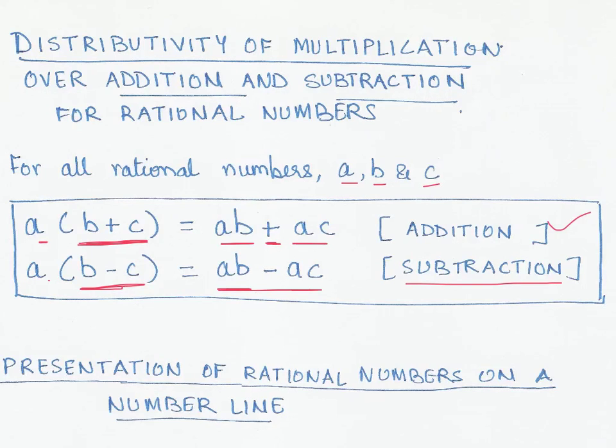Now a good exercise for you is to take any three rational numbers a, b, and c, and then you do the operation on the left hand side and see what is the result, and do the operation on the right hand side and see the result, and verify that this holds true. So that was about distributivity of multiplication over addition and subtraction for rational numbers.